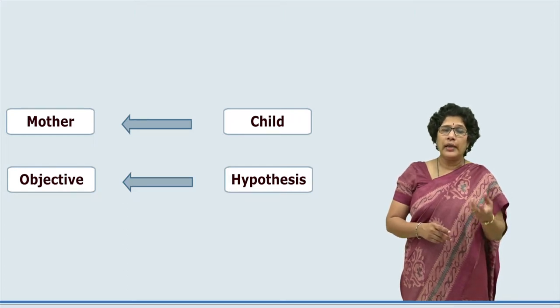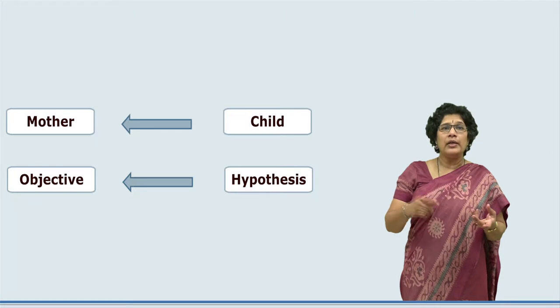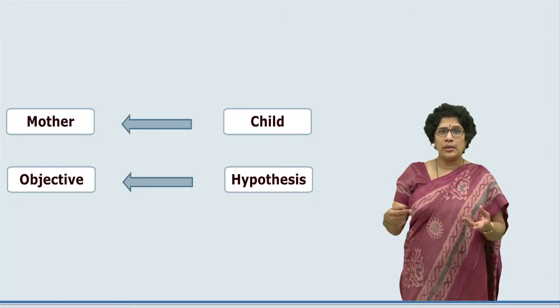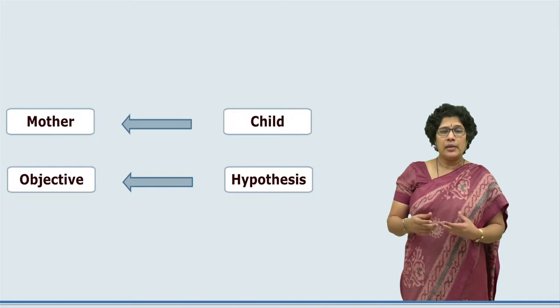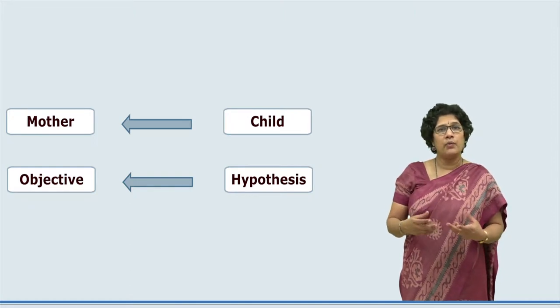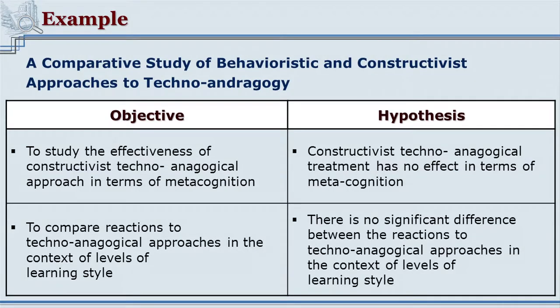It depends on the content of the objective whether it needs a hypothesis for testing. We will see examples of how objectives and hypothesis are related. Consider a research title: 'A Comparative Study of Behavioristic and Constructivistic Approaches to Technoandragogy.' One of its objectives is to study the effectiveness of the constructivistic technoandragogical approach in terms of metacognition. The corresponding hypothesis is: 'The constructivistic technoandragogical treatment has no effect in terms of metacognition.'